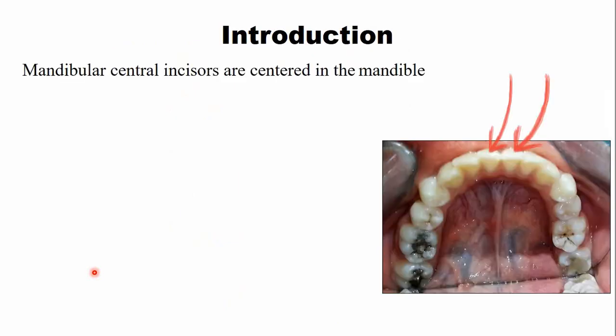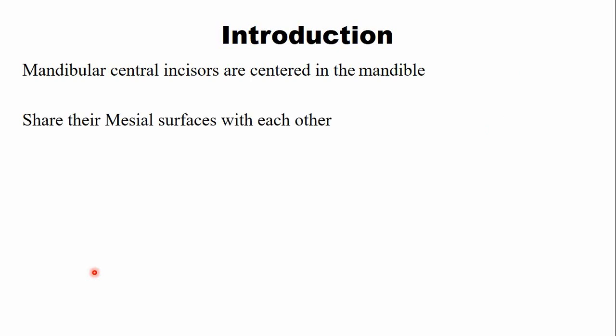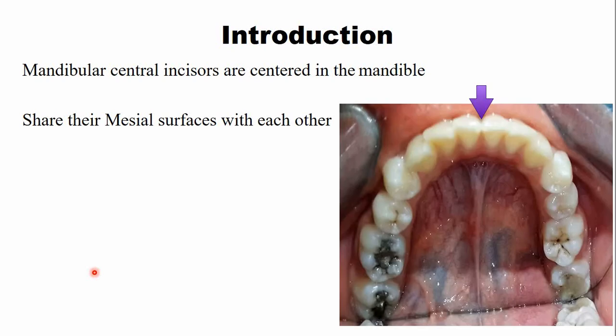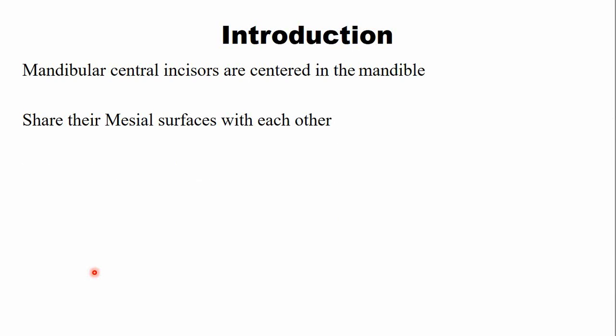The mandibular central incisors are centrally located within the mandible, as you can see in this clinical picture. The mesial surfaces of the central incisors are in contact with each other. The mandibular central incisors are the smallest tooth in the permanent dentition. With the opposing dental arch, they are only in contact with one tooth — the maxillary central incisor — not more than one tooth.